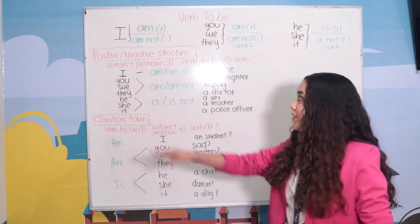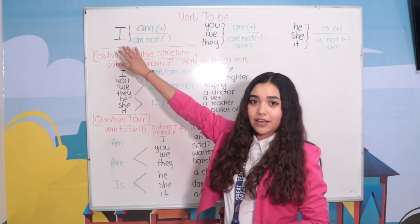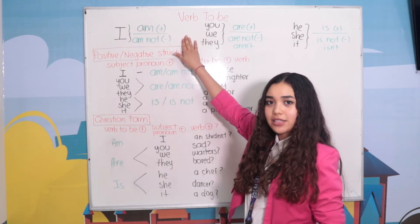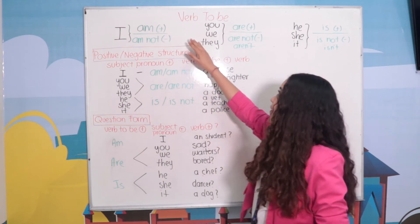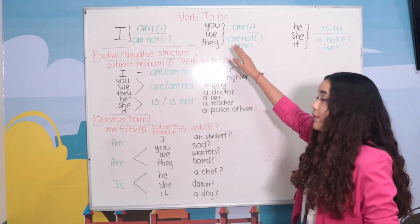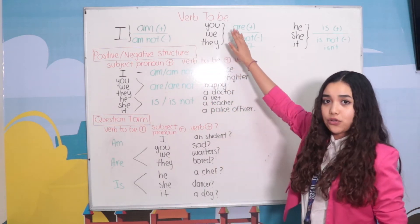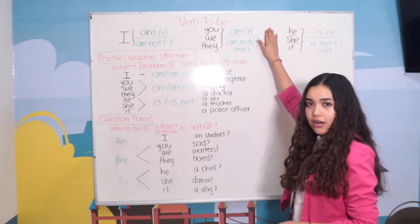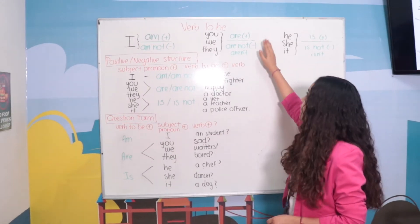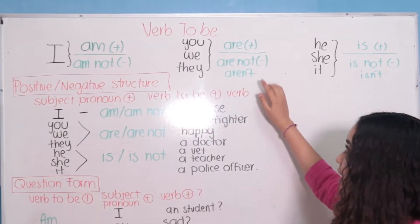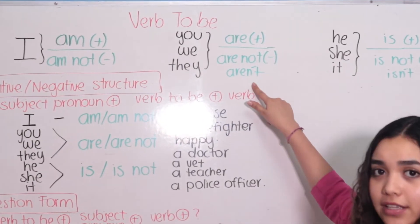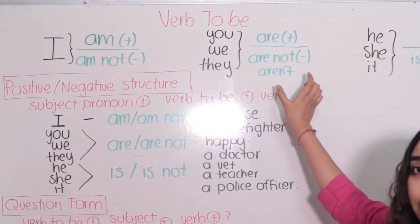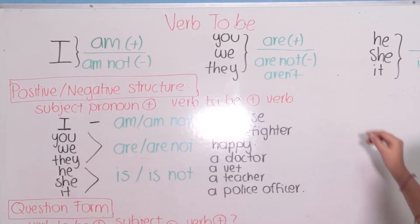First, we have I — we use 'am' in positive and 'I'm not' in negative. Then we have the plural pronouns: you, we, and they. We use 'are' in positive, 'are not' in negative, and 'aren't' is the contraction or the short form of 'are not'.